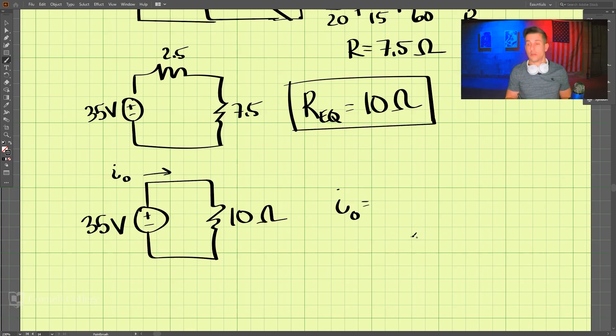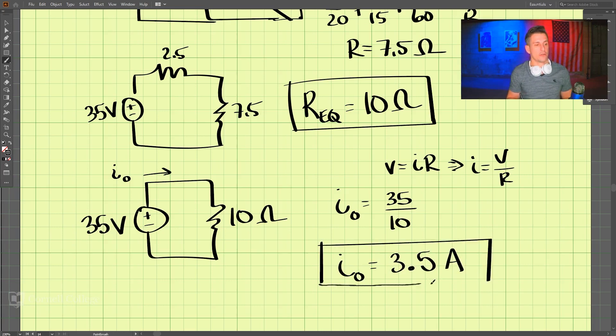We use Ohm's law. So remember Ohm's law, V equals IR, which can be written as I equals V divided by R. So we have I0, which is equal to 35, divided by the resistance, which is 10. So we have I0 is equal to 3.5 amps. And that is our other solution to this problem. So we have the equivalent resistance and the current going out of the voltage source.